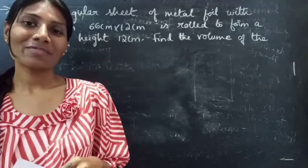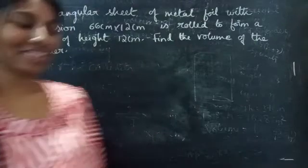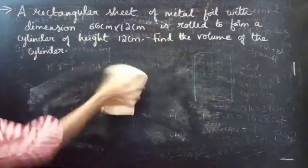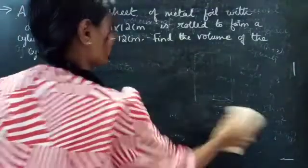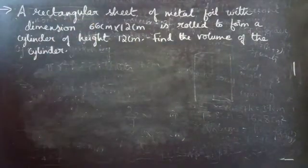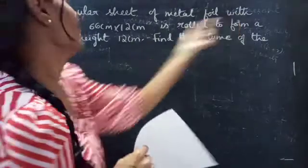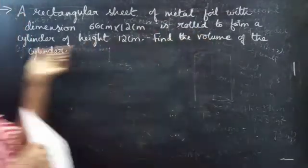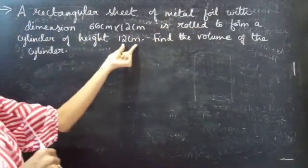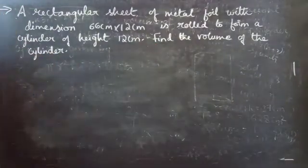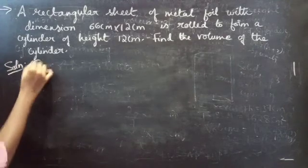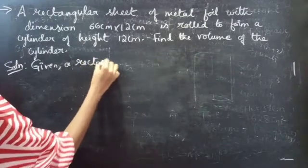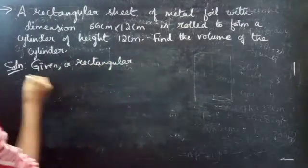Hello everyone, this is Kalpana here. In this video we are going to see a problem from mensuration. A rectangular sheet of metal foil with dimensions 66 centimeter by 12 centimeter is rolled to form a cylinder of height 12 centimeter. Find the volume of the cylinder.